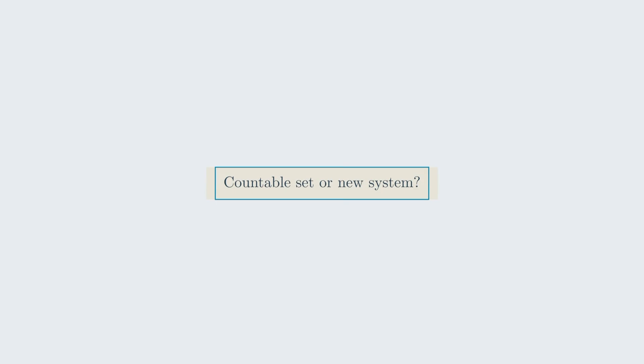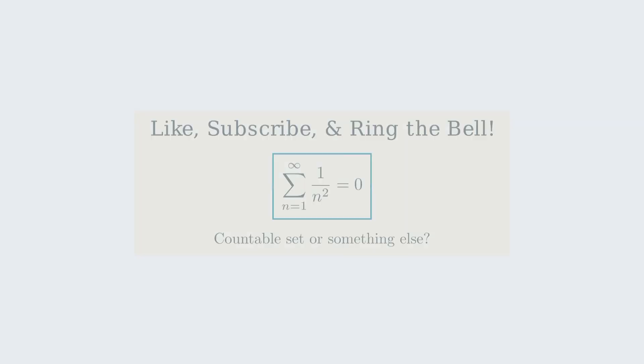The question is, did we mess up by using a countable set of positive integers for n when maybe we should have used all positive real numbers? Or is our new number system with k doing something strange? I want you to think about this and share your ideas in the comments.